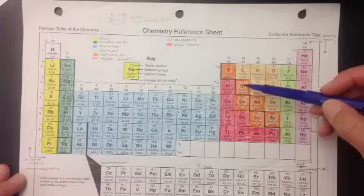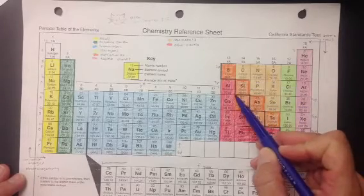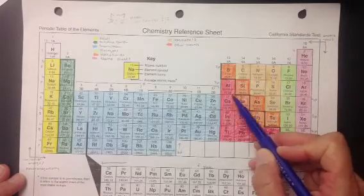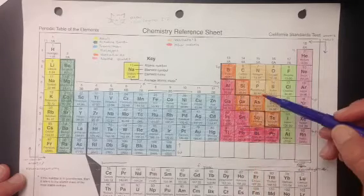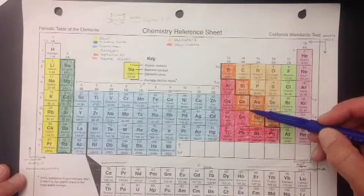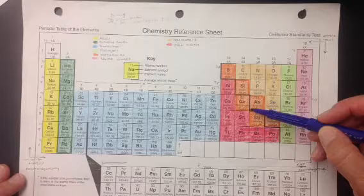And the metalloids are actually, not that they're just touching the line, like GA here, you would say that that box is touching the line, but a whole side of the box actually has to make up the zigzag line.